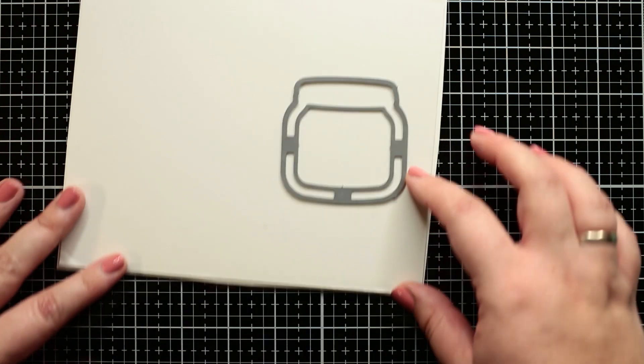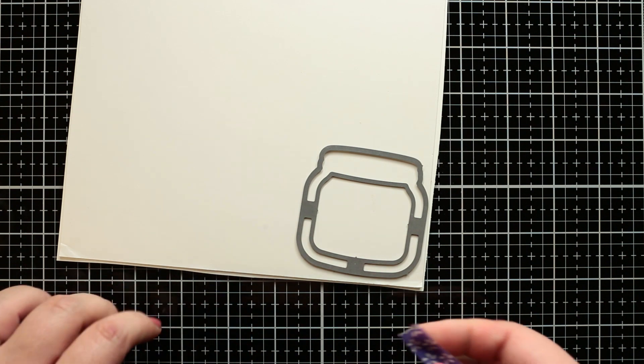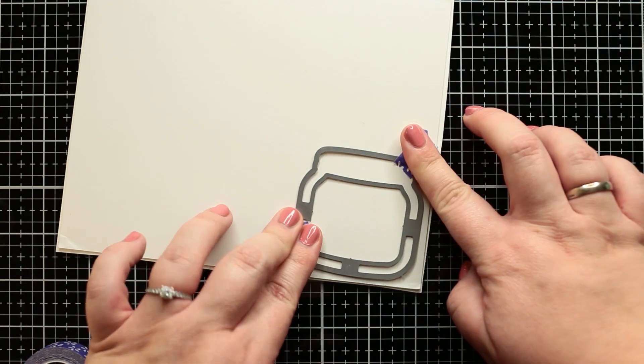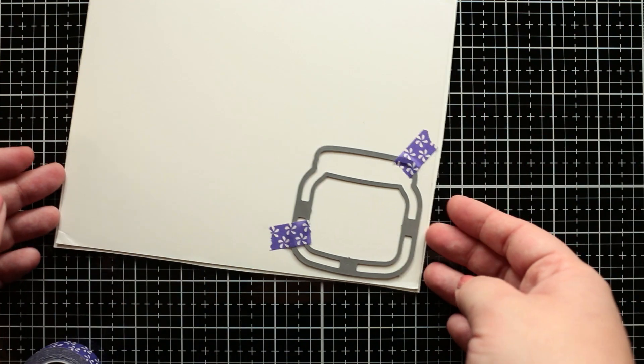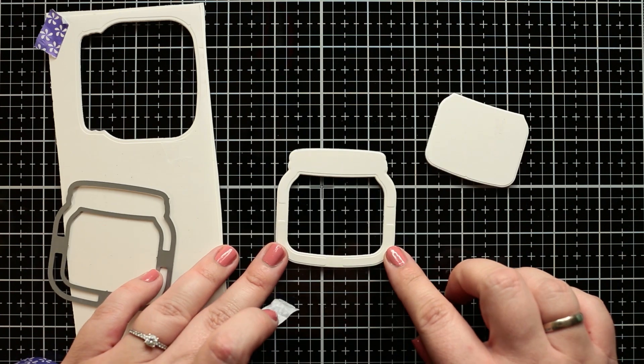Next I put the frame die to the top of the foam adhesive. The added cardstock should be down and the sticky side with parchment paper faced up. Then I fixed it with purple tape and run it through the die cut machine. This will add a nice dimension to the tag.